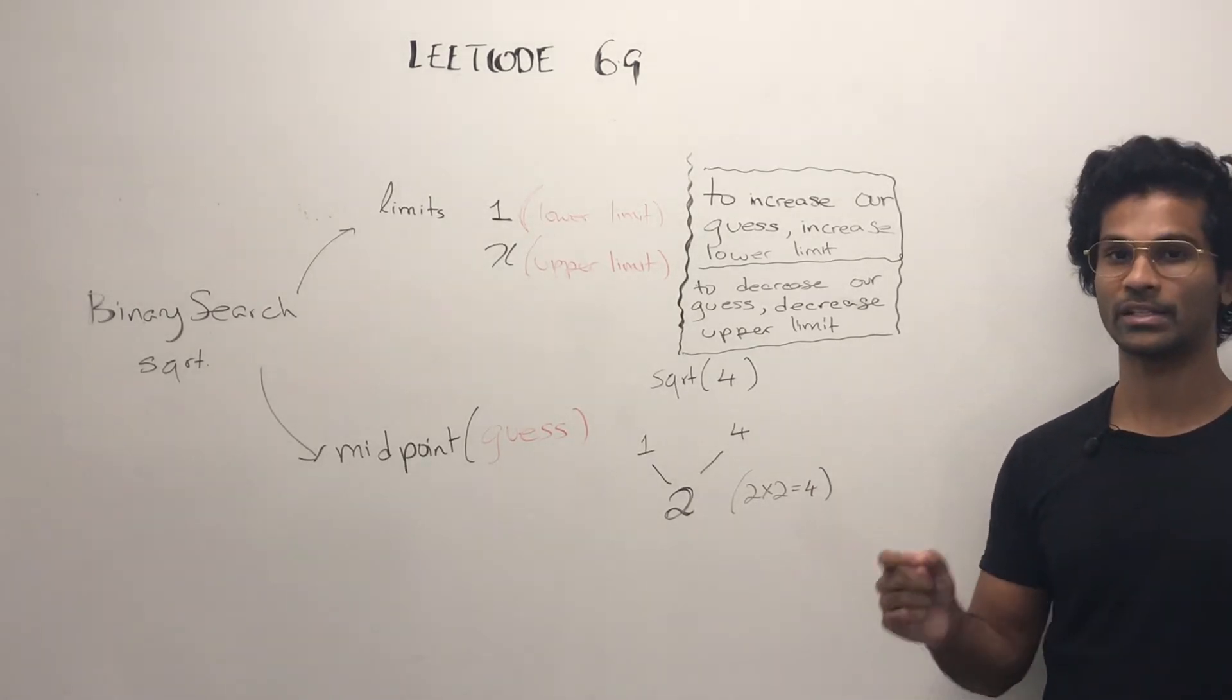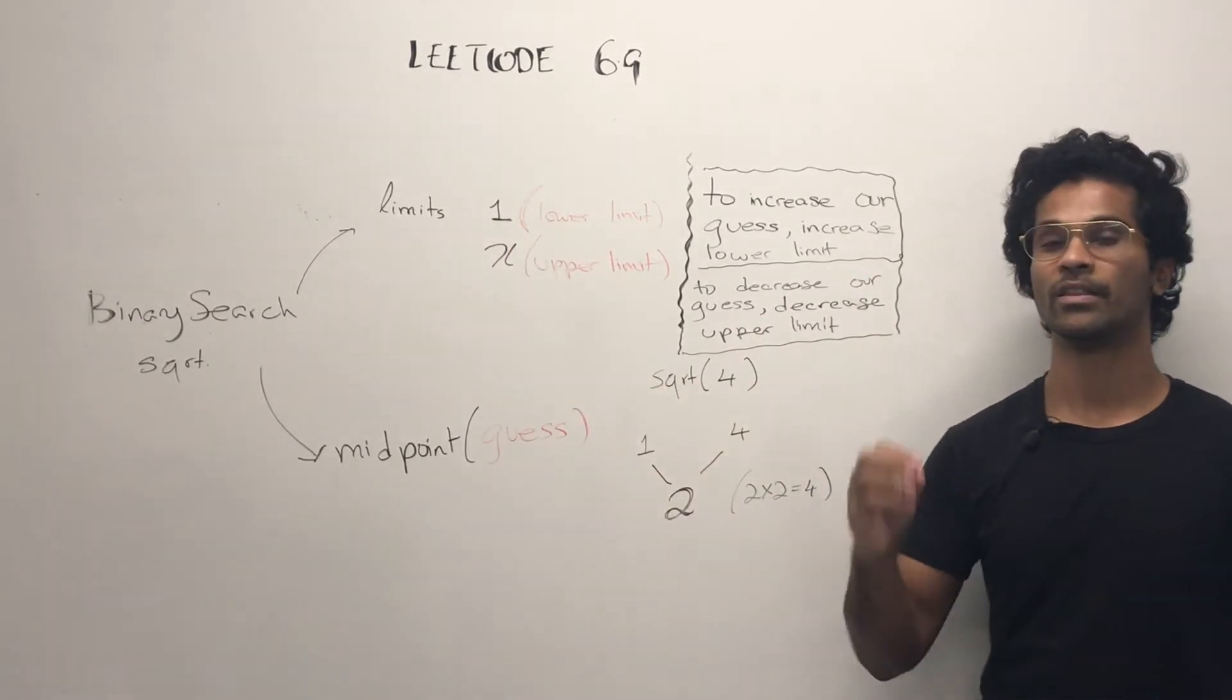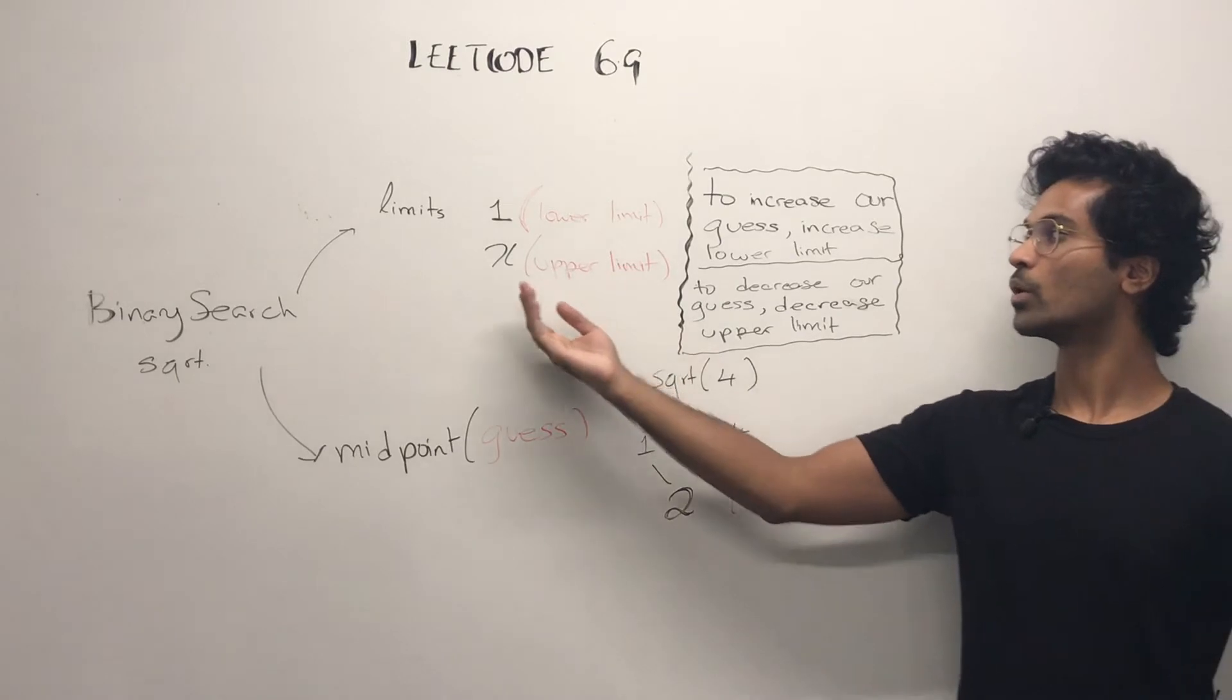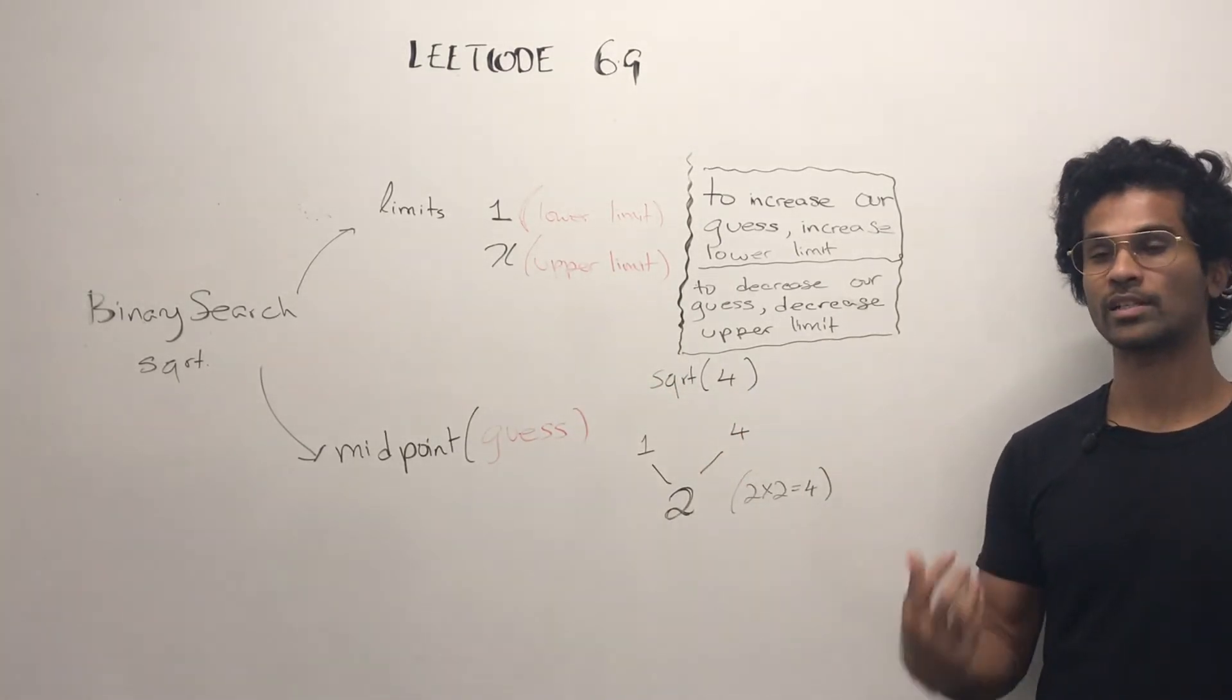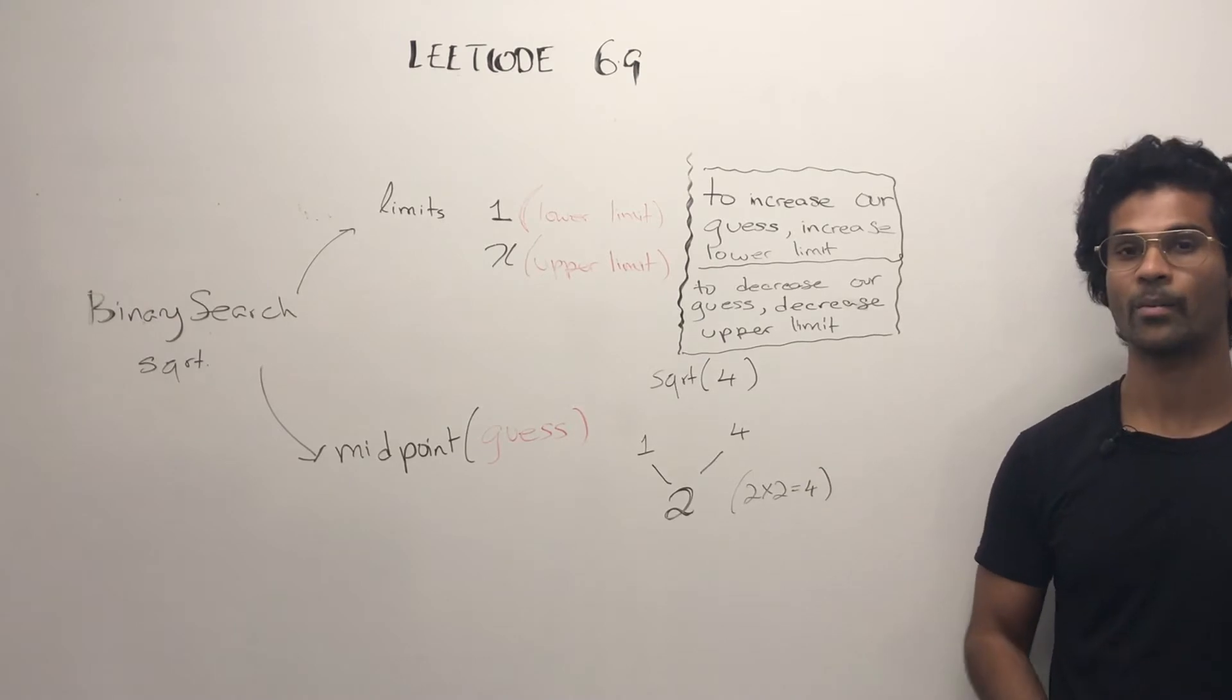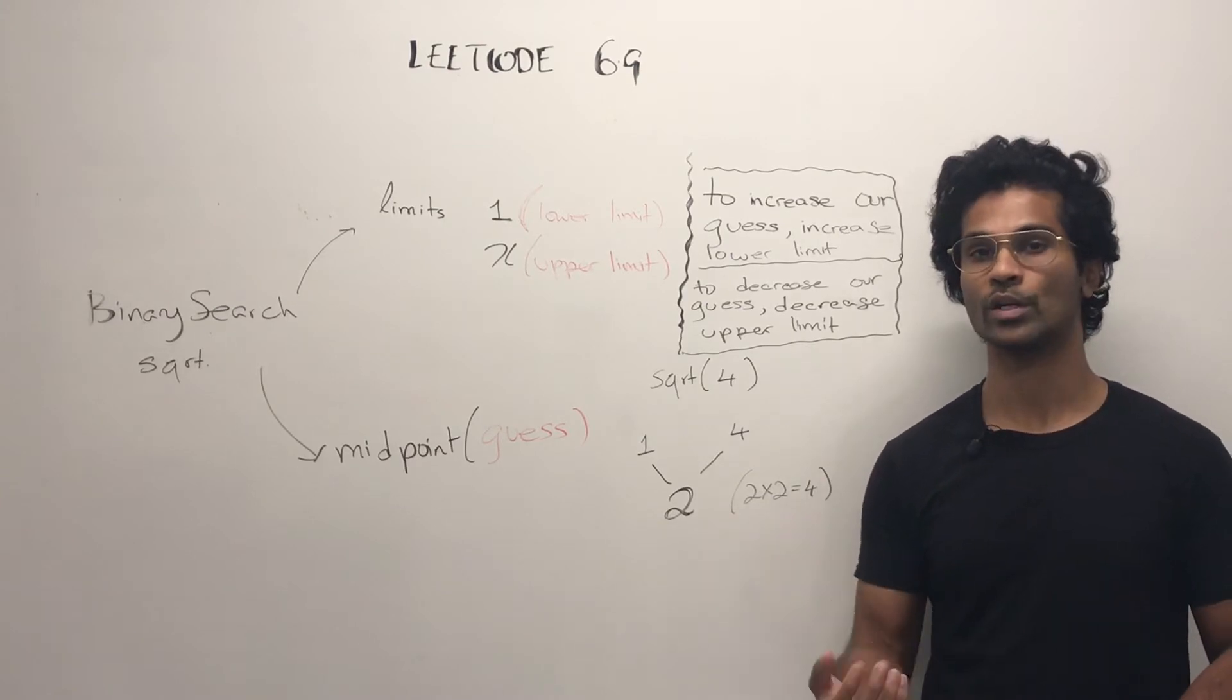We change it by either increasing the guess or decreasing the guess. To increase our guess, we increase the lower limit, so the midpoint is going to be higher. To decrease our guess, we're going to decrease the upper limit. What we do is assign the lower limit and upper limit to either the midpoint minus 1 or midpoint plus 1 because that's how we efficiently eliminate the search space.